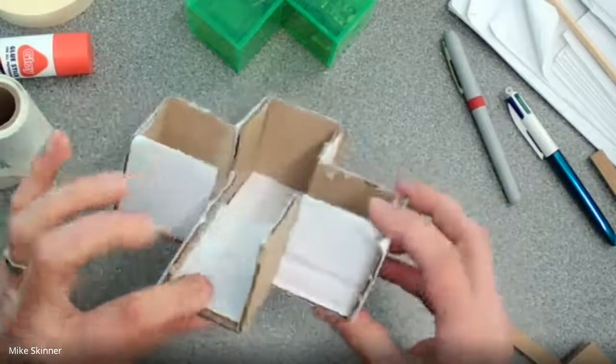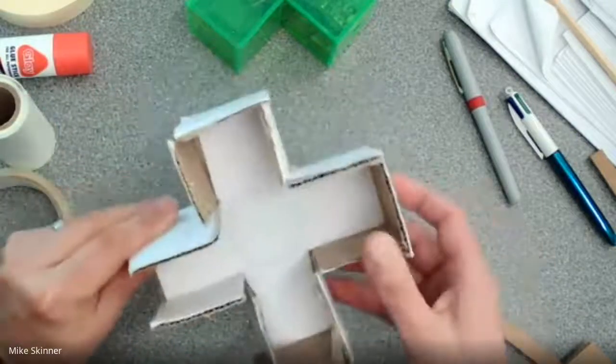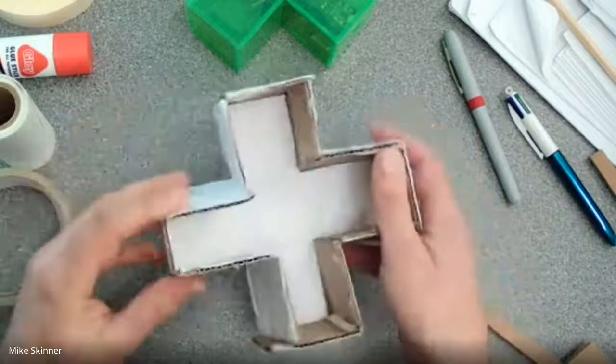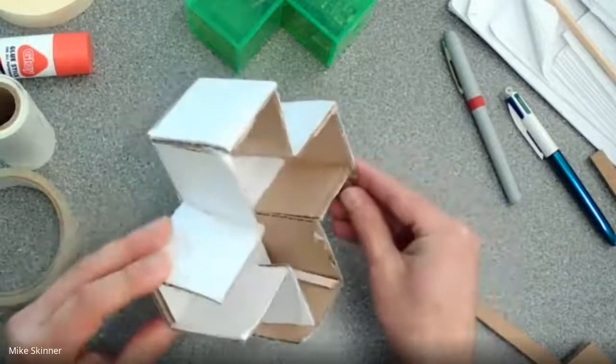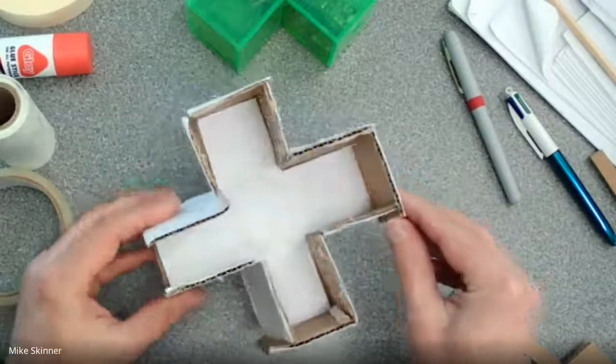For corrugated card it takes a little bit more work but it depends on what resources you have to hand. This one has been joined together in the corners using either PVA glue or hot glue. It depends what you've got at home.